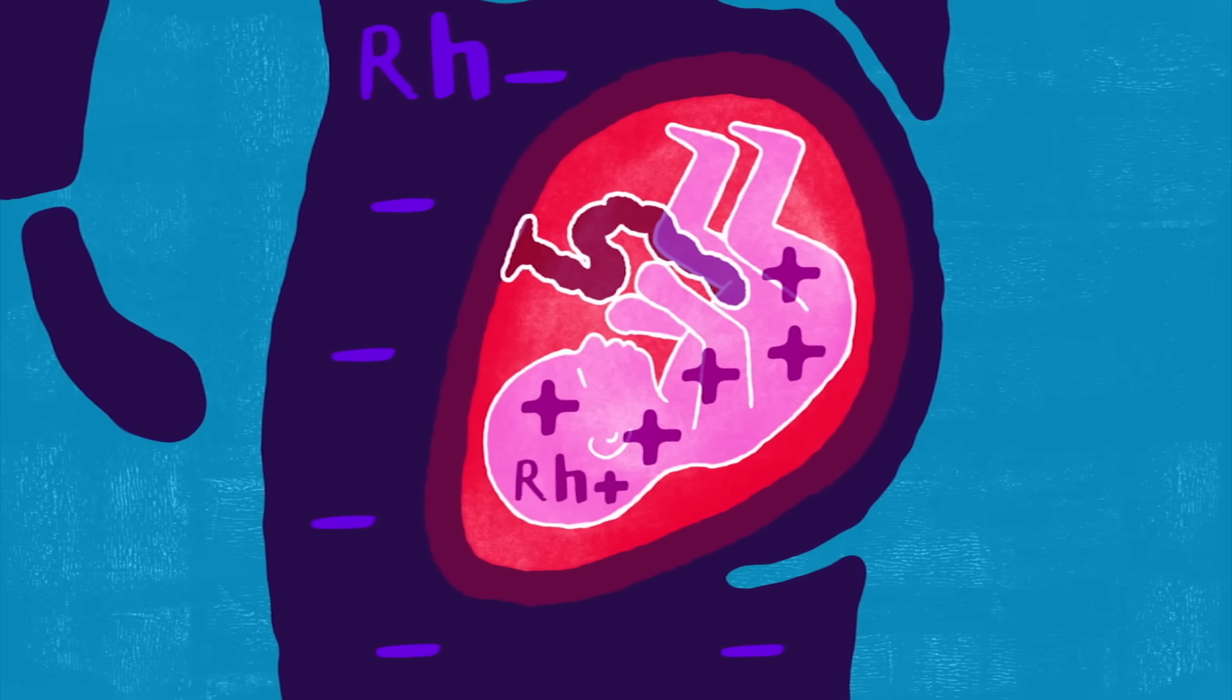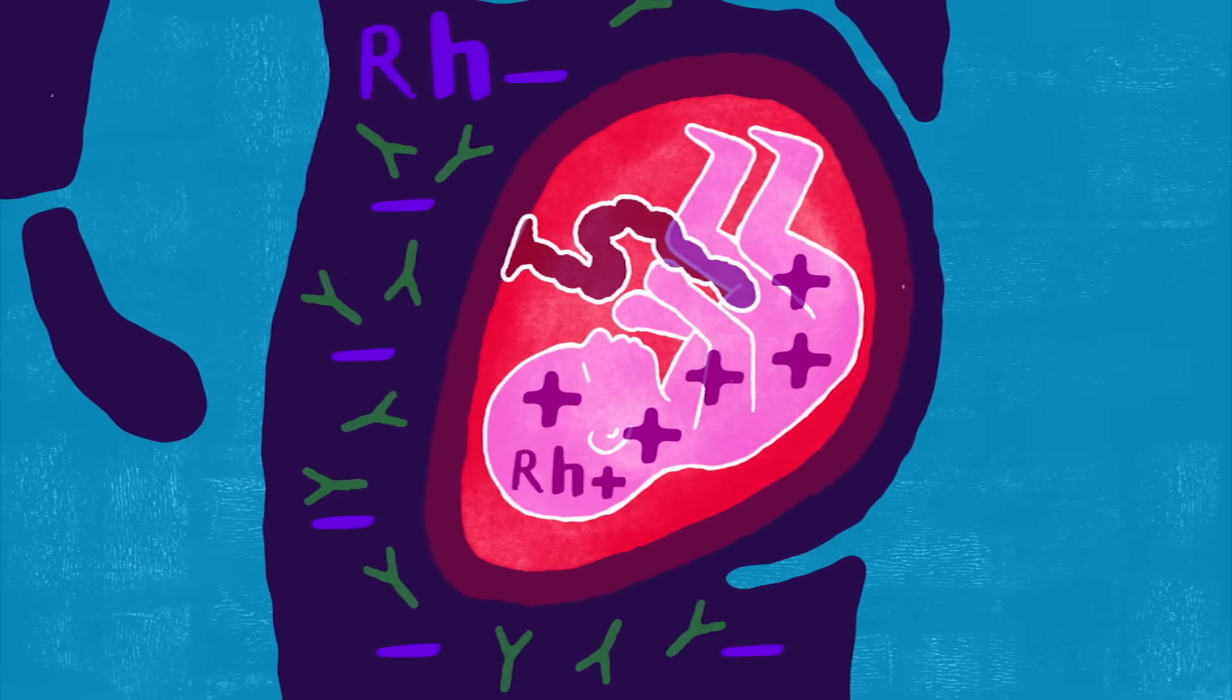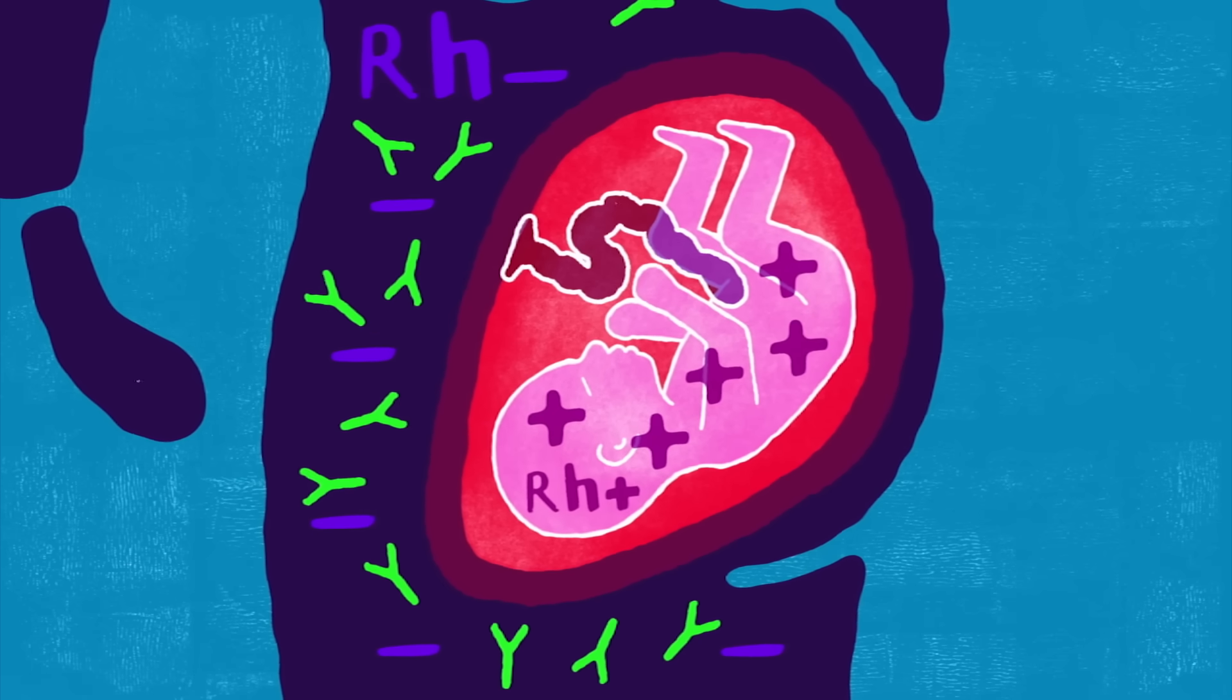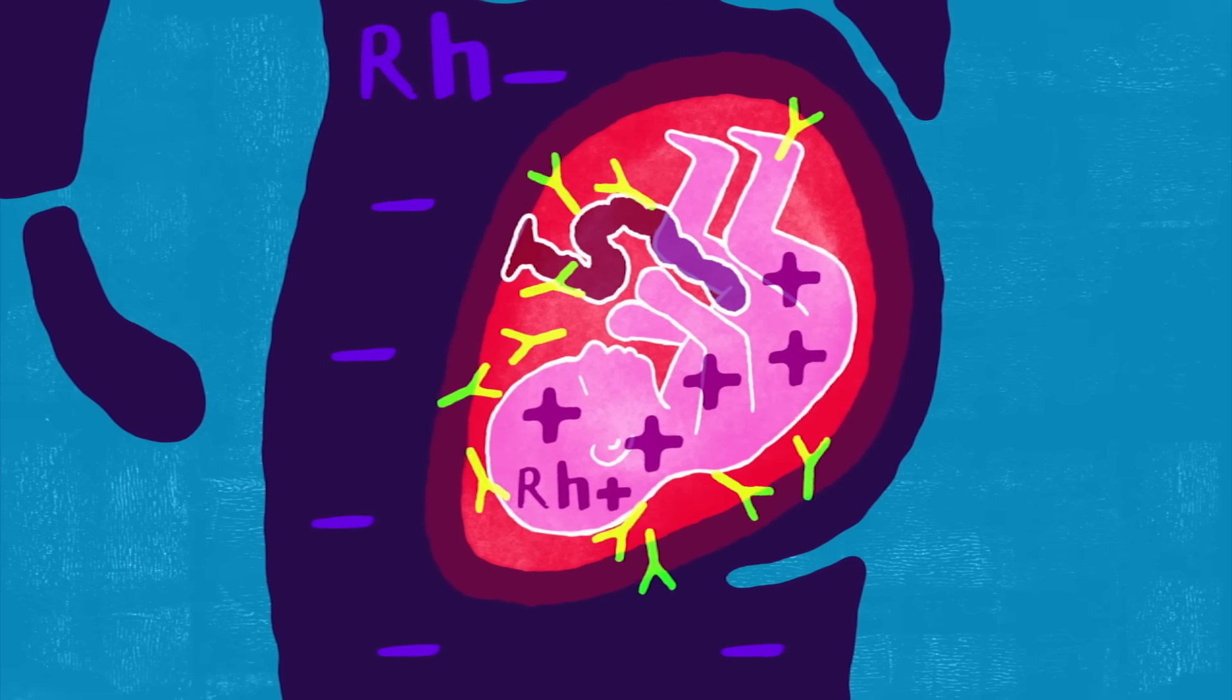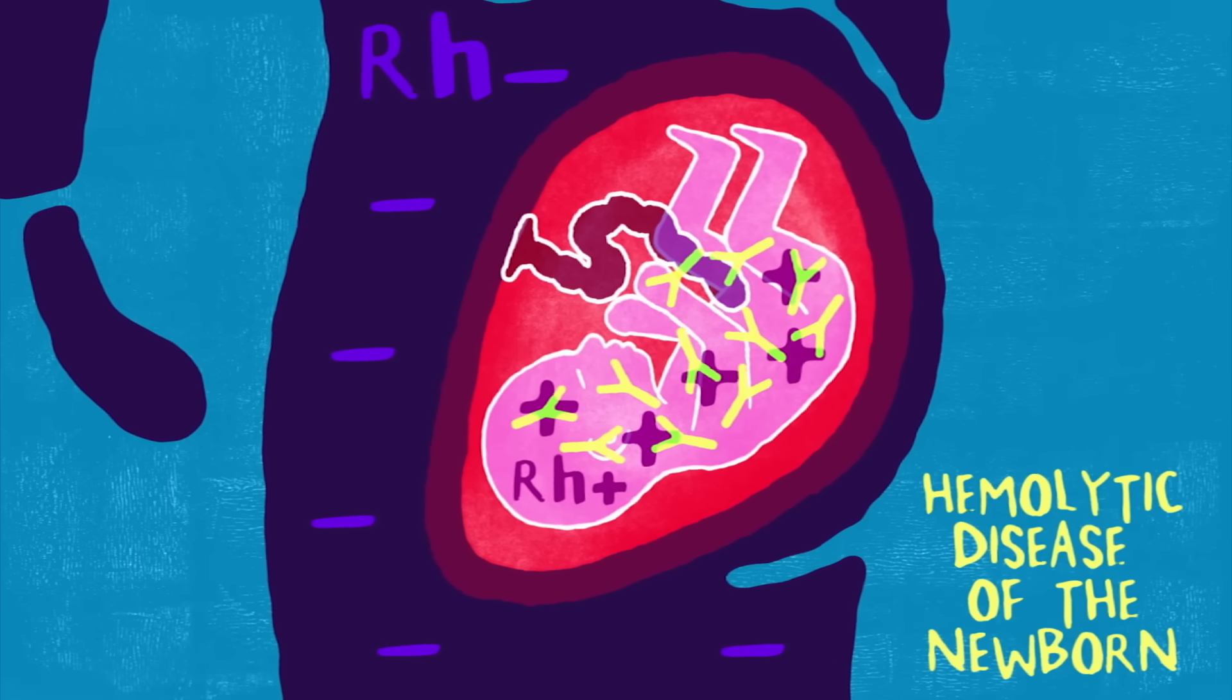If an Rh negative mother is carrying an Rh positive child, her body will produce Rh antibodies that may cross the placenta and attack the fetus, a condition known as hemolytic disease of the newborn.